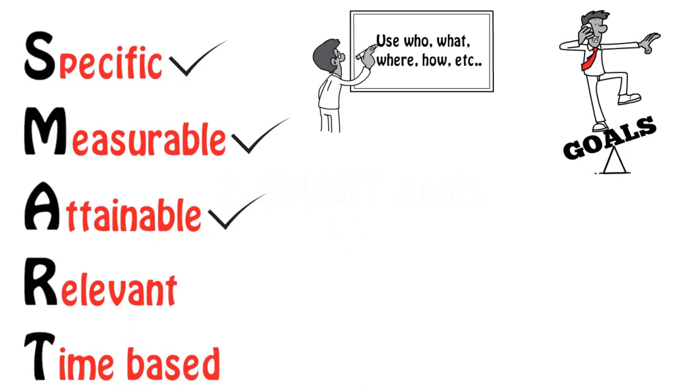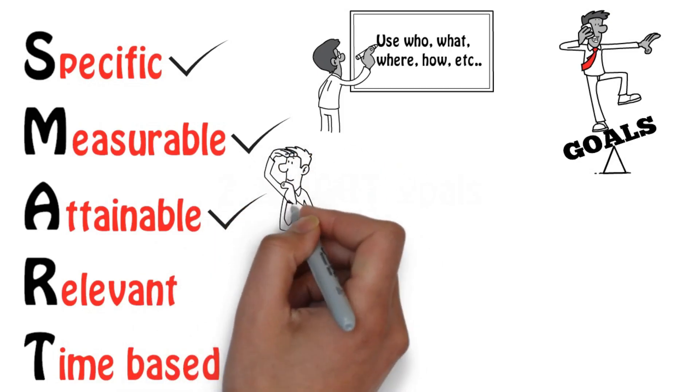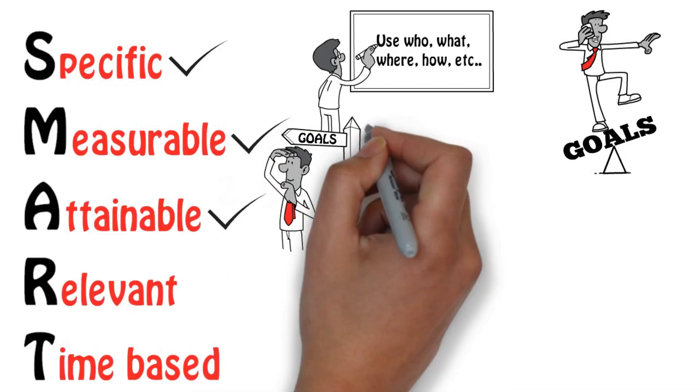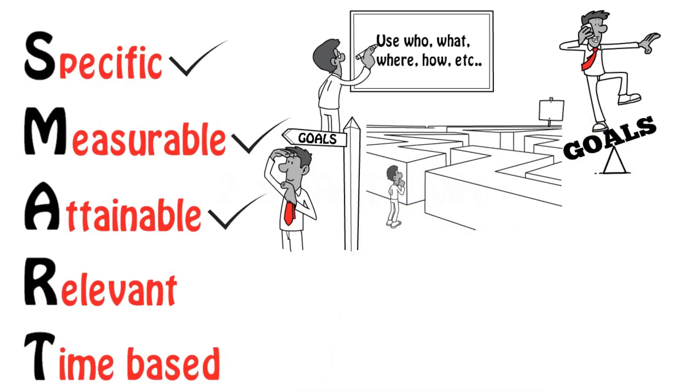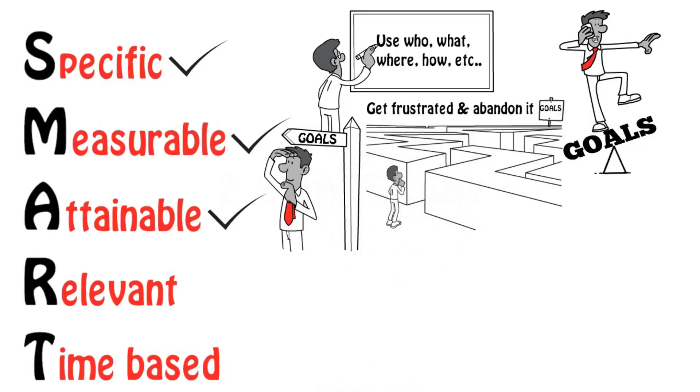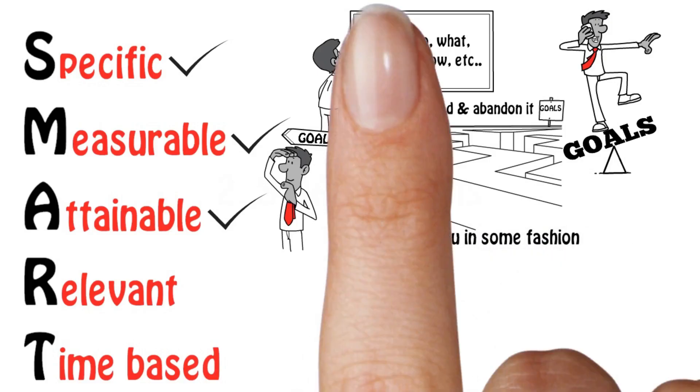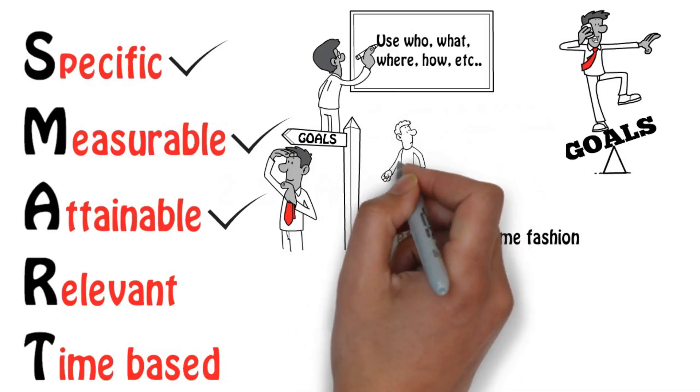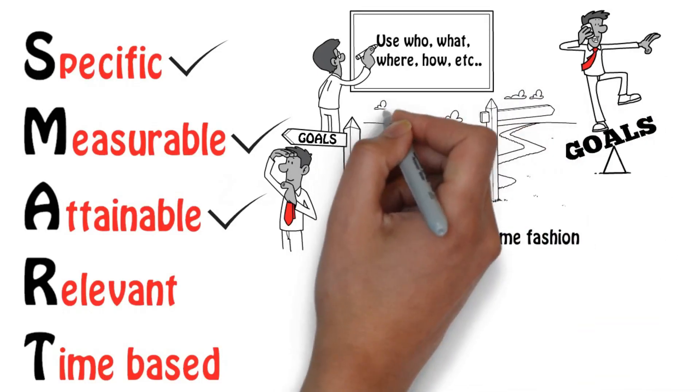A, attainable: The fact that goals have to be attainable is standard advice on the topic of how to set goals. Everyone knows there's no point in setting a goal that you'll never be able to achieve. All you do is get frustrated and abandon it. Less well known is the fact that goals need to stretch you in some fashion. If a goal isn't engaging, you get bored and abandon it. Choose goals that are obtainable and achievable stretches.